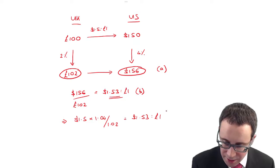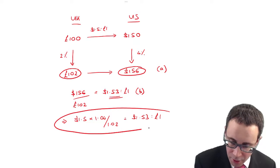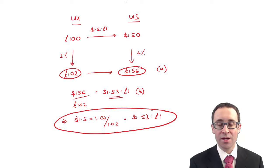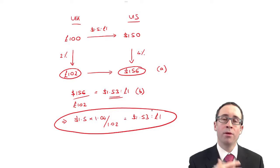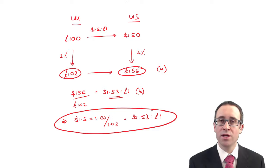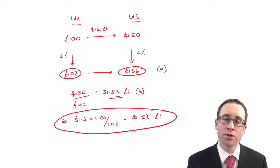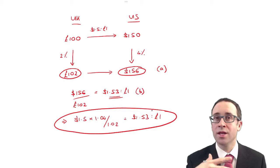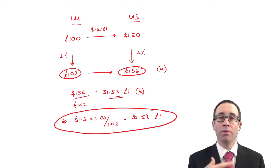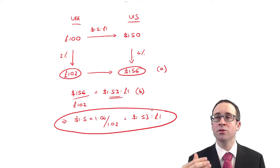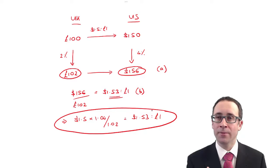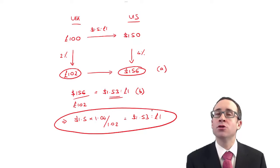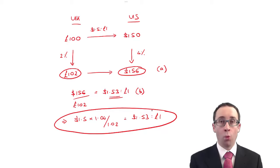What you do need to do is what I have written at the bottom. You take the current exchange rate — which is 1.5 — and multiply it by 1 plus the interest rate in the overseas currency, divided by 1 plus the base rate. The one on the bottom is always the one quoted to the base currency, whatever's quoted to 1.